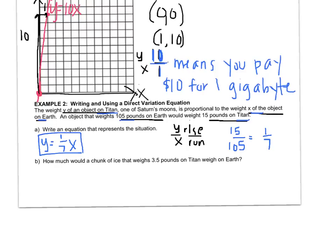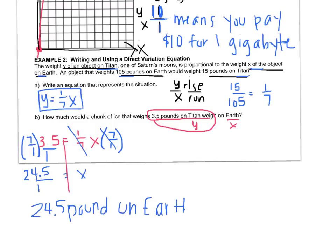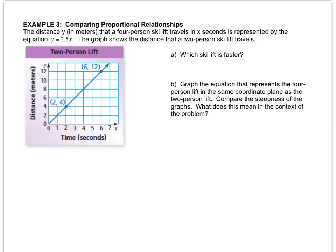How much would a chunk of ice that weighs 3.5 pounds on Titan weigh on Earth? Remember, Titan is y and Earth is x. So 3.5 pounds is going to go in for y, and then I'm just going to substitute it in and solve for x. Remember from chapter one we drop a line down the equal sign. How do you get rid of the one seventh? If you said divide by one seventh, you didn't learn anything I taught you in chapter one. You have to multiply by the reciprocal. So multiply by seven over one and that gives you 24.5 over one equals x. So that's 24.5 pounds.